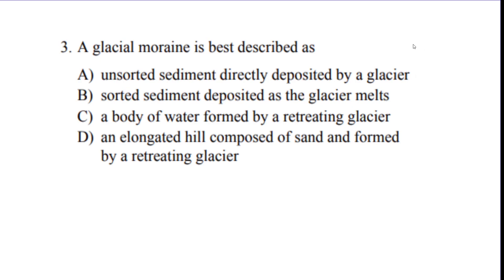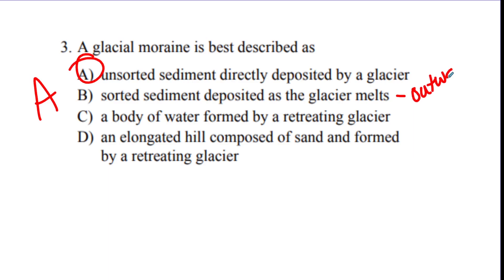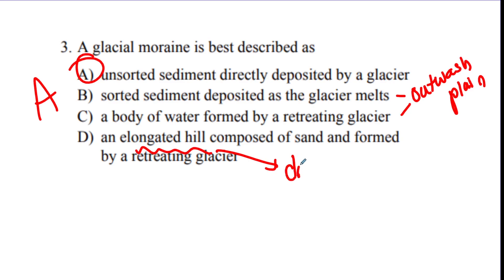Number three: a moraine in a glacier is best described as what? Moraines are unsorted piles of sediment. Option B — sorted sediment deposited as the glacier melts — refers to the outwash plain. A body of water formed by a retreating glacier is also part of the outwash plain concept. An elongated hill refers to drumlins — that's the vocab way of saying the teardrop structure.